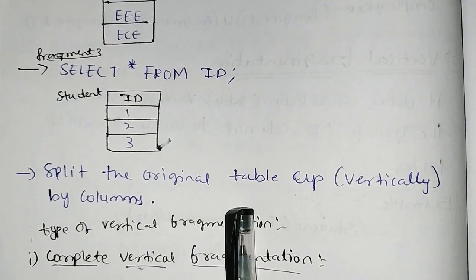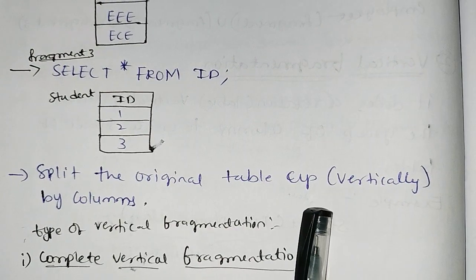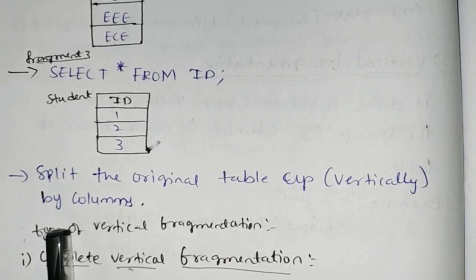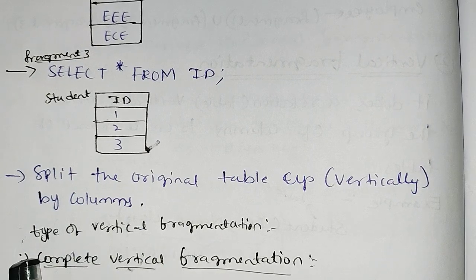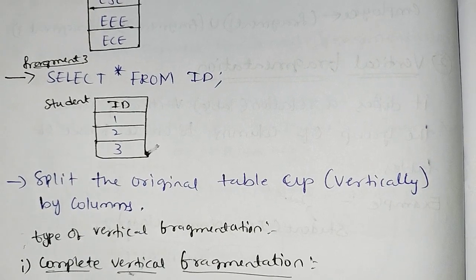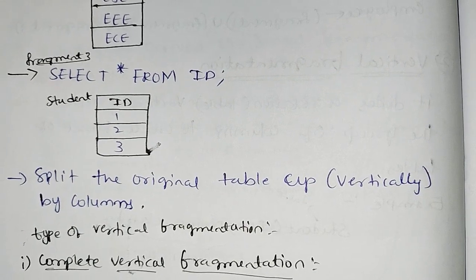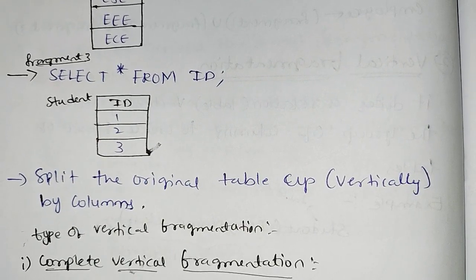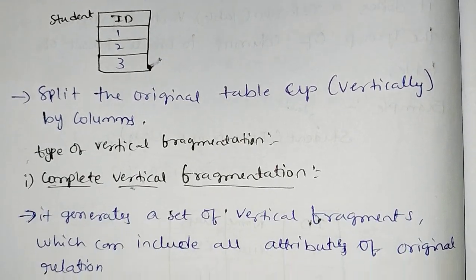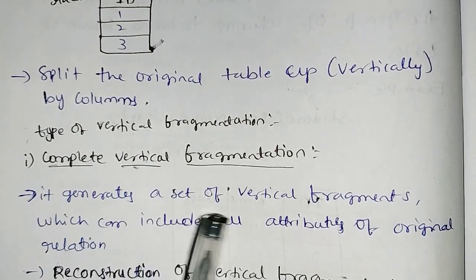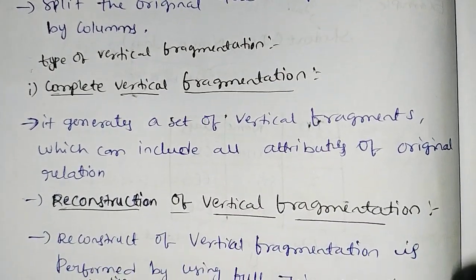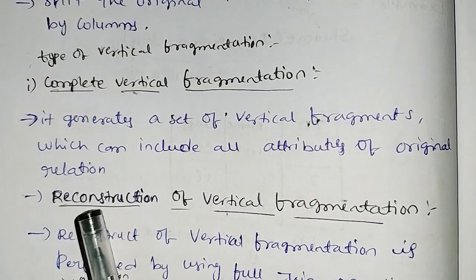So you can see the table split from the original table by column. In vertical fragmentation, this is a complete vertical fragment. It generates a set of vertical fragments which can include all attributes of the original relation.